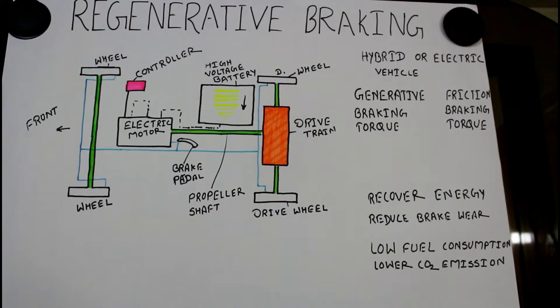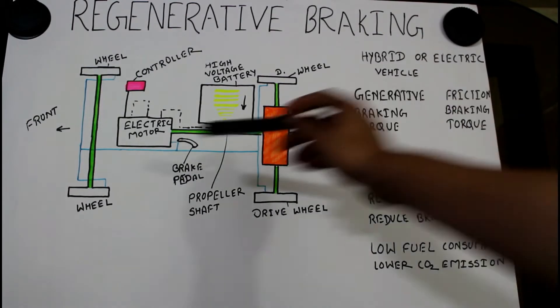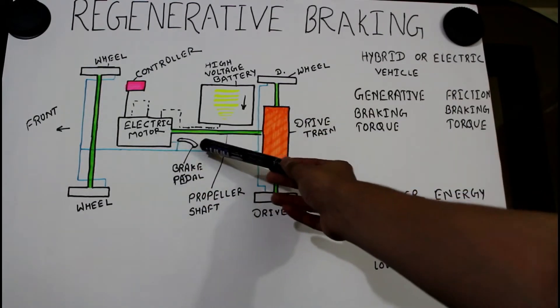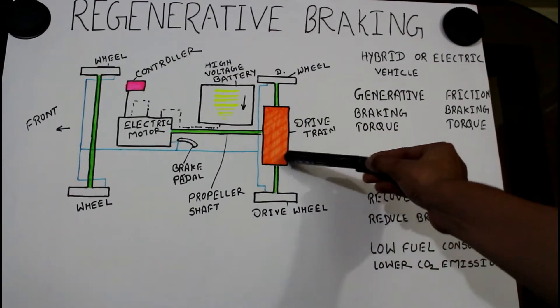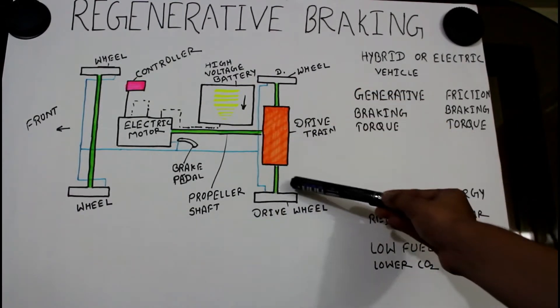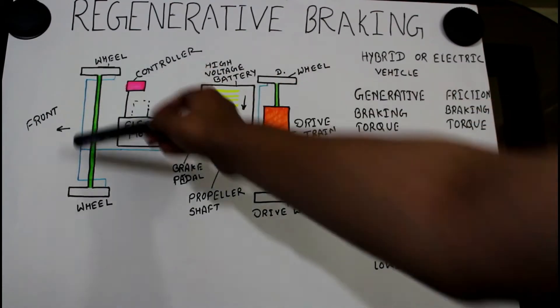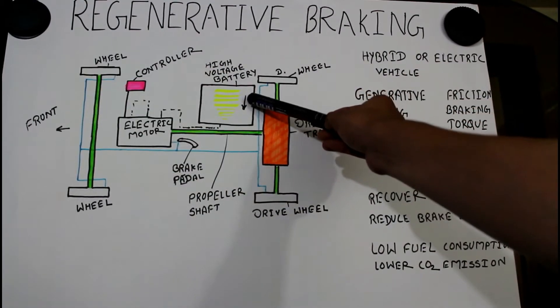The basic parts of the system are electric motor, brake pedal, propeller shaft, drivetrain, two shafts which are also called drive shafts and the wheels, high voltage battery, and the controller.